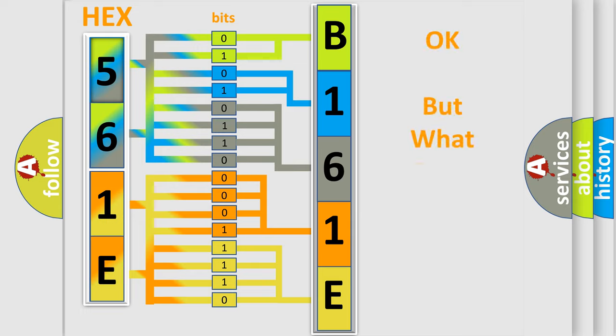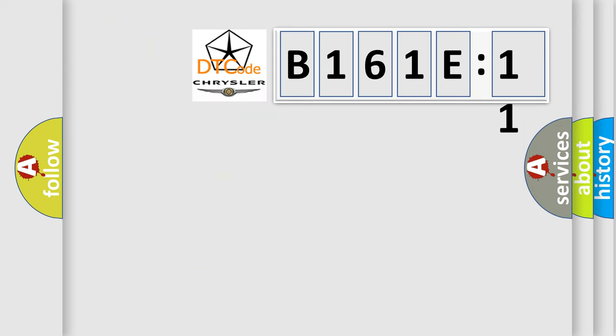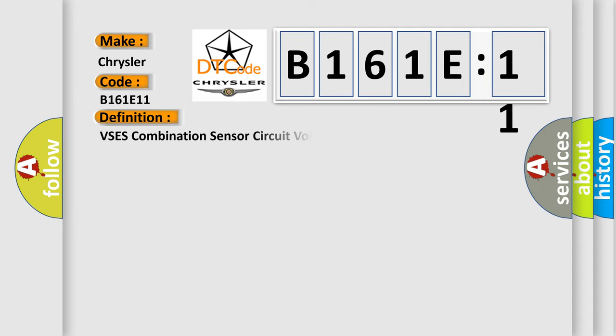We now know how the diagnostic tool translates the received information into a more comprehensible format. The number itself does not make sense if we cannot assign information about what it actually expresses. So, what does the diagnostic trouble code B161E11 interpret specifically for Chrysler car manufacturers?